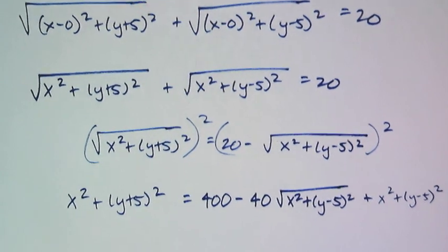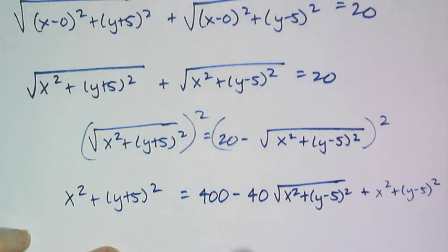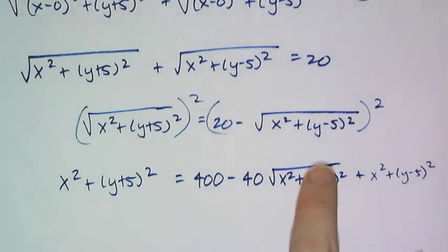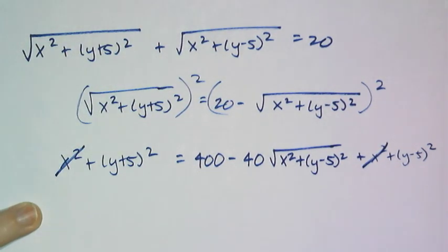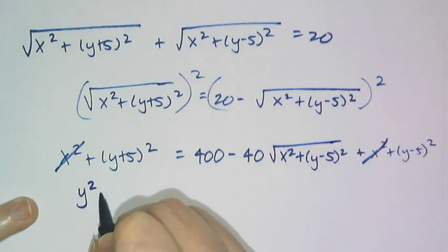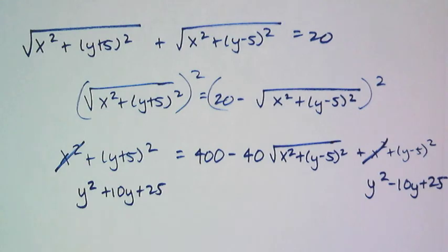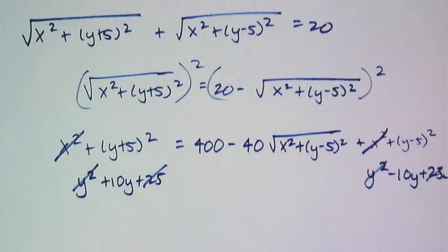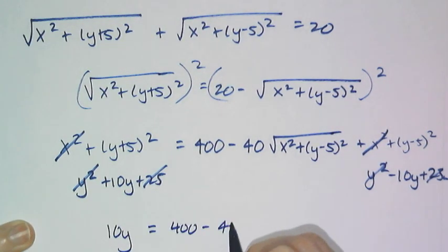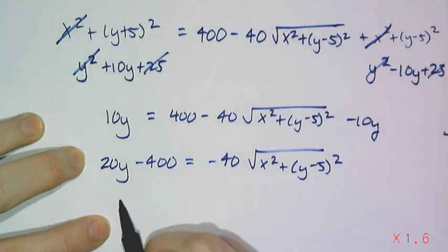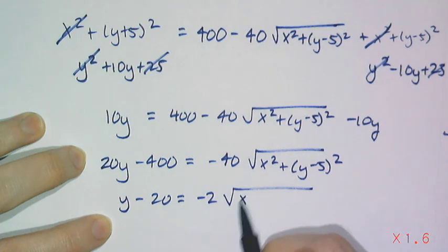Squaring once doesn't completely simplify things — it just got rid of one radical, and I still have the other. I need to isolate the remaining square root before squaring again. Luckily some terms cancel: the x squareds cancel. Expanding (y+5)² gives y²+10y+25 and (y−5)² gives y²−10y+25, so the y squareds and 25s cancel too. I'm left with 10y on one side, and 400 minus 40 times the square root of stuff, minus 10y on the other. Dividing everything by 20 gives y minus 20 equals negative 2 times the square root of x squared plus (y−5) squared.